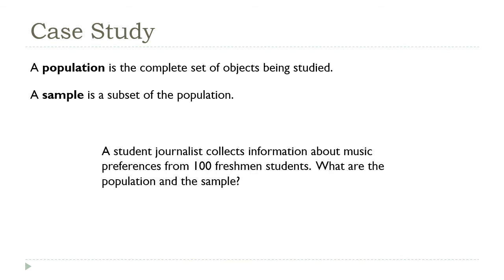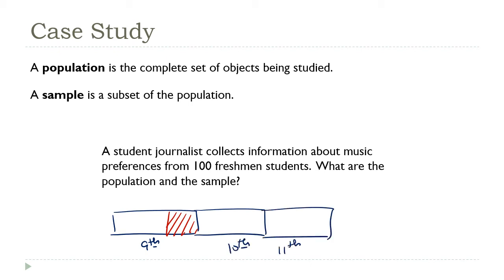This is another situation where we have to think narrowly. The sample is the 100 students that we are actually going to be interviewing. You might be tempted to say that the population is all the students in the school, but this would be too much. Students change significantly over the four years between 9th and 12th grades, so it isn't necessarily reasonable to assume that the tastes of freshmen are going to represent the tastes of seniors. In this case, I wouldn't expect the population to be anything more than just that freshman class.